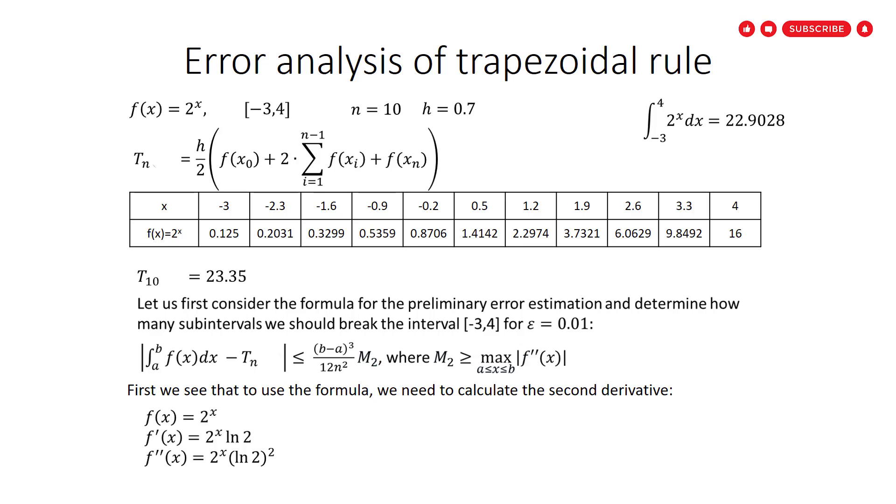Let us first find M2. That is the function f(x) which we have equal to 2^x. When we derive it, the first derivative equals 2^x multiply ln(2).